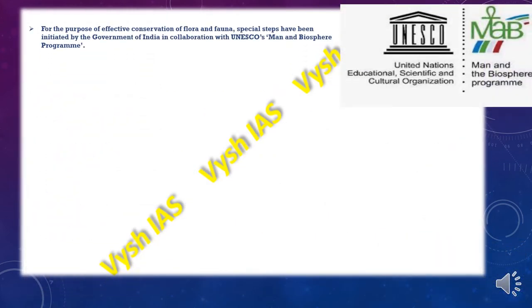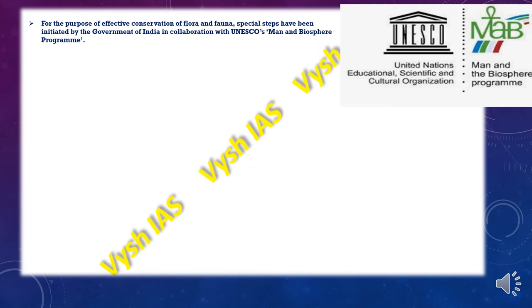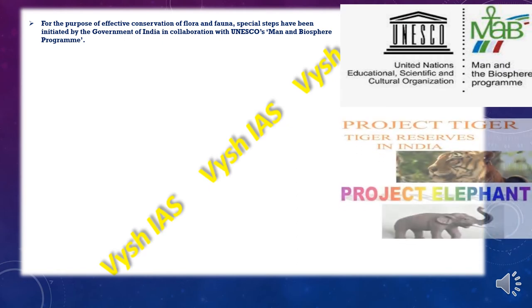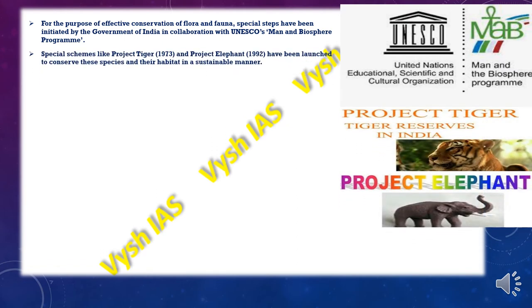This is the Man and Biosphere program, set up in collaboration with UNESCO's Man and Biosphere program for the effective conservation of flora and fauna. Special themes and projects like Project Tiger and Project Elephant have been launched to conserve these species in their habitat in a sustainable manner.